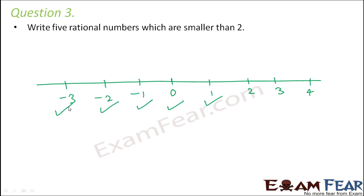These are rational numbers smaller than 2. Anyways, you will have more rational numbers between them, but these are also rational numbers. They are integers, but all integers are rational numbers. So we can see that these are the rational numbers which are smaller than 2.